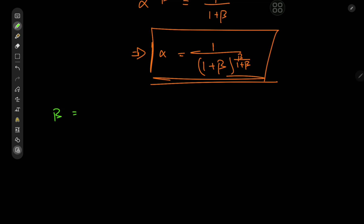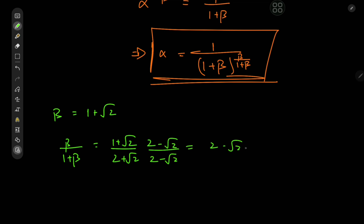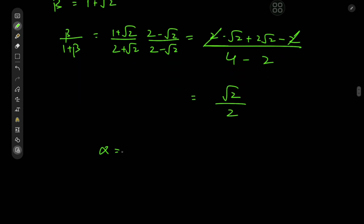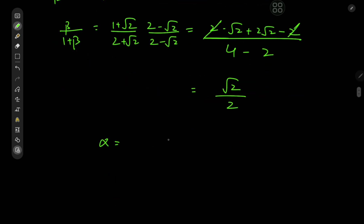First, for beta equal to 1 plus root 2, beta divided by 1 plus beta gives us 1 plus root 2 divided by 2 plus root 2. Expanding using the conjugate gives 2 minus root 2 plus 2 root 2 minus 2 upstairs and 4 minus 2 downstairs, resulting in root 2 over 2. So alpha in this case is 1 over 2 plus root 2, raised to the power root 2 over 2.